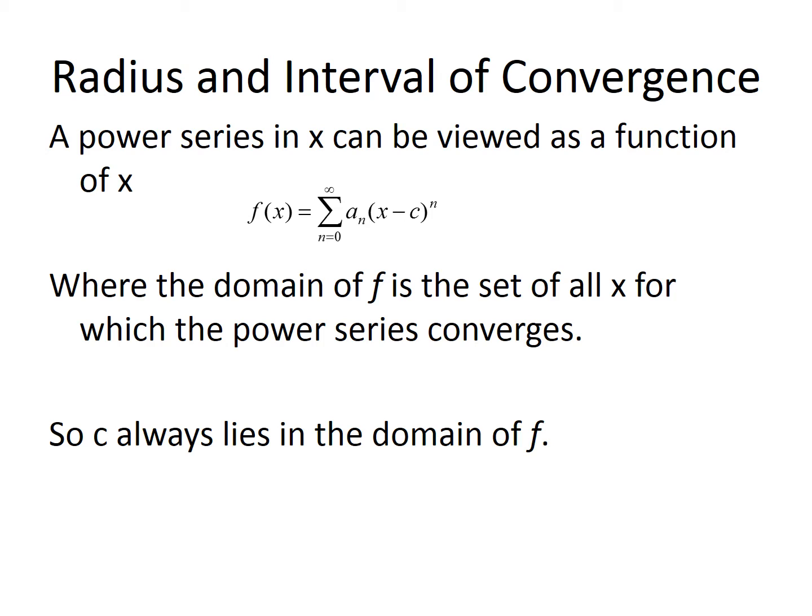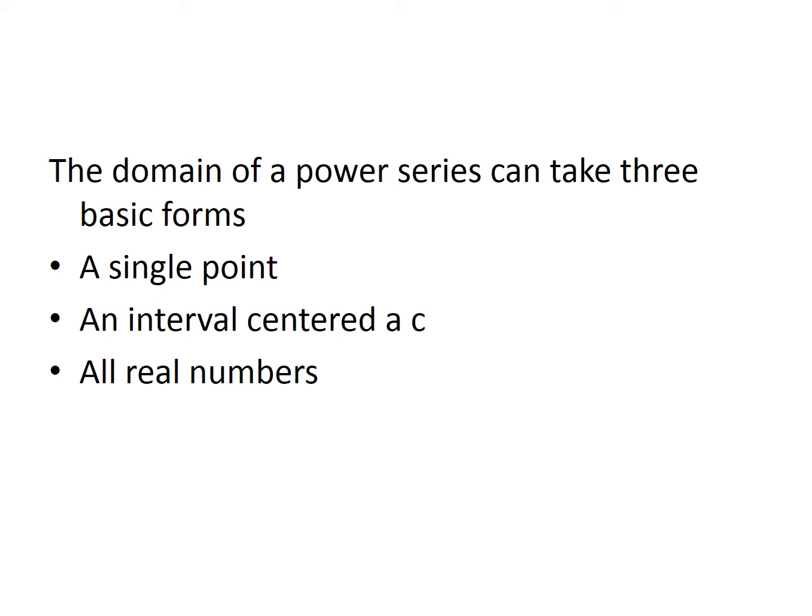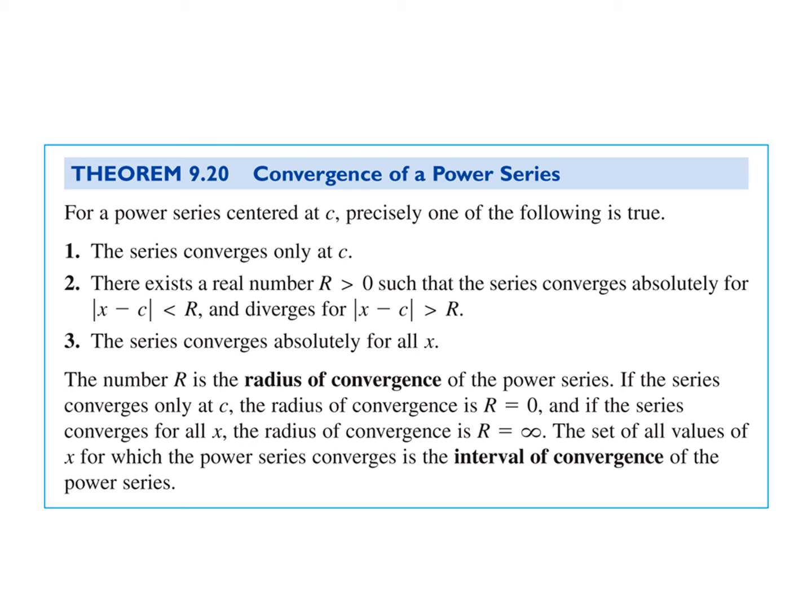The radius and interval of convergence: a power series in X can be viewed as a function, and the domain of that function are all values of X for which the series converges. C will always lie in the domain — in other words, C always has to lie within the interval of convergence. A series can converge at a single point, on an interval, or for all real numbers. To determine if a series converges, we're going to use the ratio test. If the absolute value of the limit is less than 1, then the series converges.